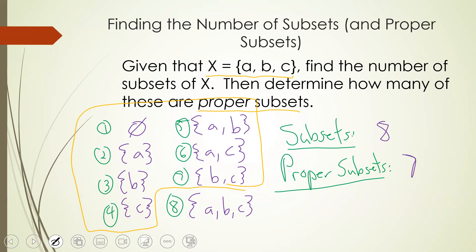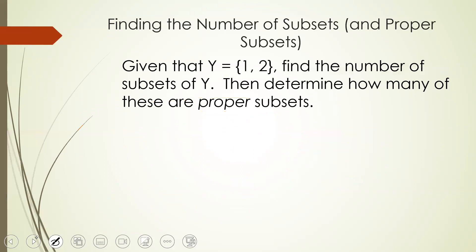This was for the specific set X containing elements a, b, and c. But this applies to any set of size 3 — it doesn't matter what the elements are. If there are three of them, the number of subsets is 8 and the number of proper subsets is 7.